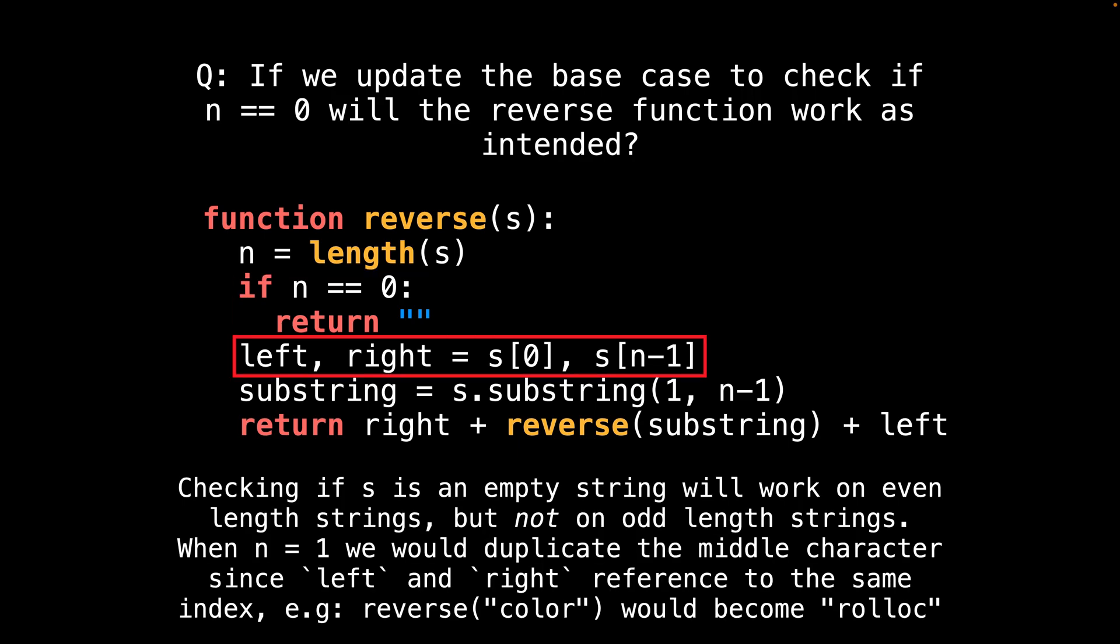The answer is that the reverse function will continue to work for even length strings, but will fail to produce the right answer for odd length strings. What happens is that the middle character would get duplicated if we don't handle the n equals one case, since both the left and the right variables would point to the same character.